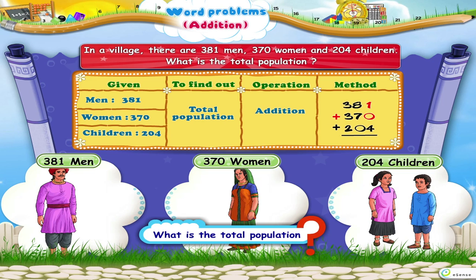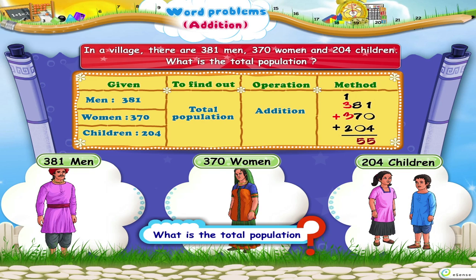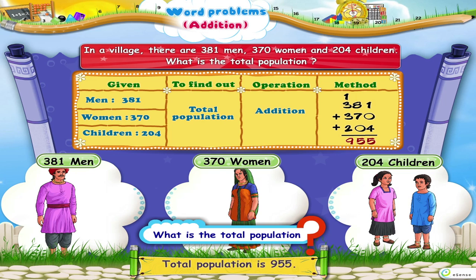Now perform the operation: 381 plus 370 plus 204. One plus zero plus four equals five. Eight plus seven plus zero equals fifteen; write five and carry forward one. Now three plus three plus two plus one equals nine. So total population is nine hundred and fifty-five.